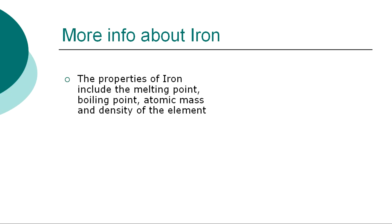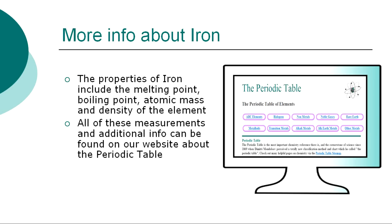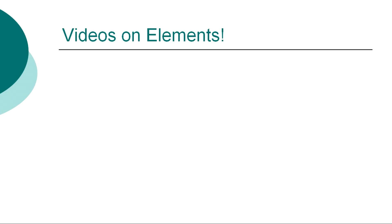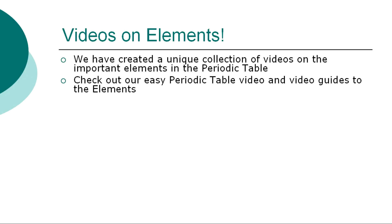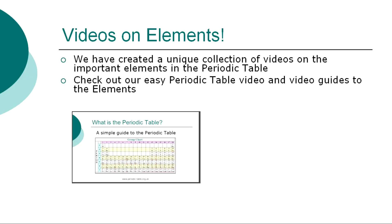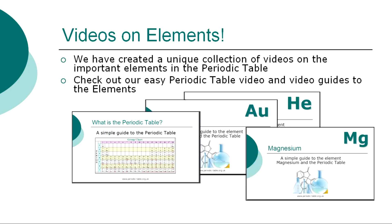The properties of iron are classified by many other factors, including the melting point, boiling point, atomic mass, and density of the element. All of these precise measurements, together with additional facts and information, can be found on our website. So ends our simple guide to the element iron. We have created a unique collection of videos on many other important elements that have been developed to enable chemistry students to gain a fast overview of the properties of each of the elements, together with their discovery and history. Check out our easy video guides to the elements via our website.